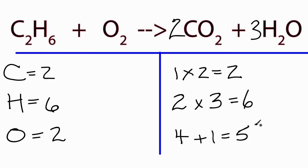But our oxygens have changed again, so we need to update that information. So we have two times two, that's four, plus we have the three times the one, that's three, so we have a total of seven oxygens.